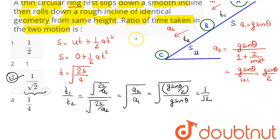That is, 1 by root 2 is the ratio of the time taken in these two motions. So option number 3 we can say is the correct answer. Hence 3 is our answer.